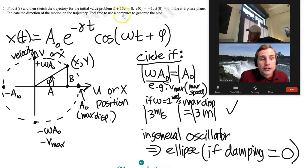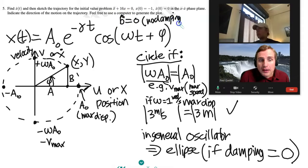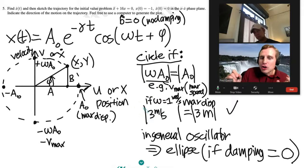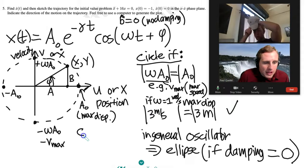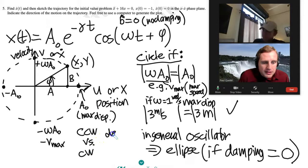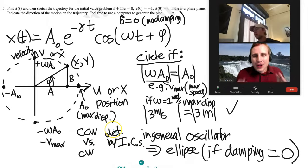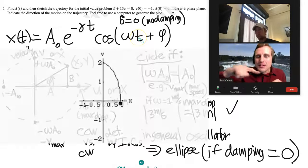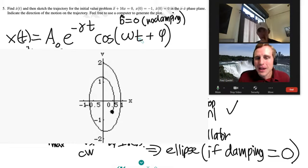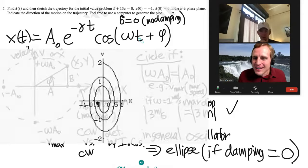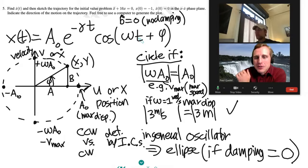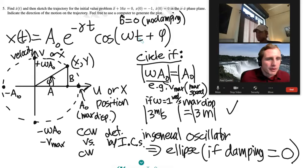The ellipse requires damping = 0, so B = 0 in the damping constant sense. For a damped oscillator, the amplitude decays via e^(−γt), so the ellipse spirals inward — the system loses energy with time. Counterclockwise vs. clockwise direction is determined by the initial conditions.